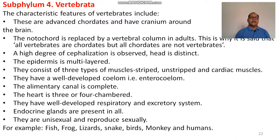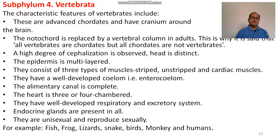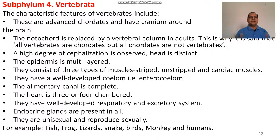Subphylum Vertebrata: the characteristic features of Vertebrata include being advanced chordates with a cranium around the brain. The cranium is made up of bones and is the hardest part of the vertebrate body, protecting the soft brain. The notochord is replaced by the vertebral column in adults — this is why it is said that all vertebrates are chordates but not all chordates are vertebrates. A high degree of cephalization is observed and the head is distinct. The epidermis is multilayered. They consist of three types of muscles: striated muscles, unstriated muscles, and cardiac muscles. They have a well-developed coelom and a complete alimentary canal from mouth to anus.